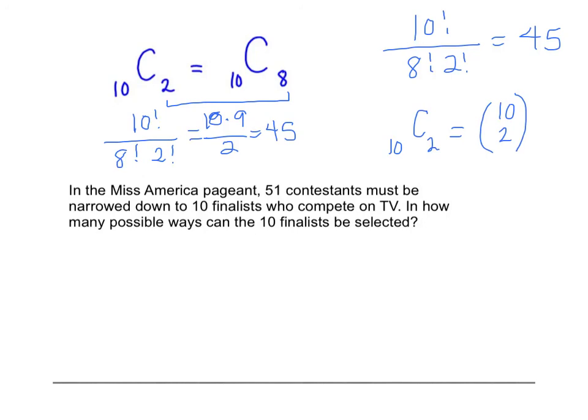The Miss America pageant, 51 contestants have to be narrowed down to ten. And how many possible ways can the ten finalists be selected? I'm not talking about first, second, third, or fourth, fifth. I'm talking about just groups. So that's a combination. So if you do 51 contestants, taking ten at a time, that's going to be 51 factorial over 10 factorial, 41 factorial, which is a really, really big number. And so you can play with that, put that in your calculator and see what that would be.